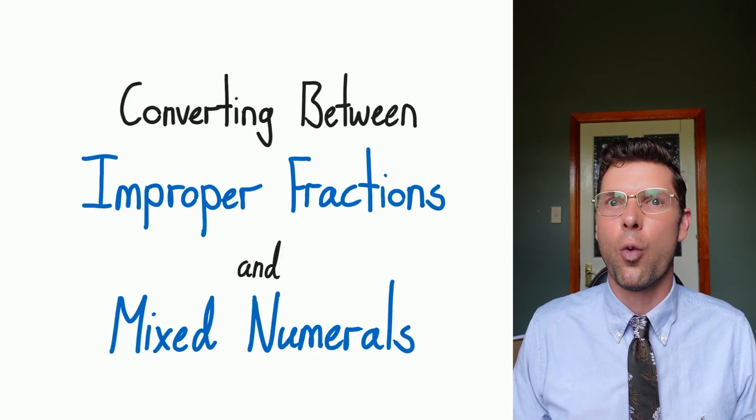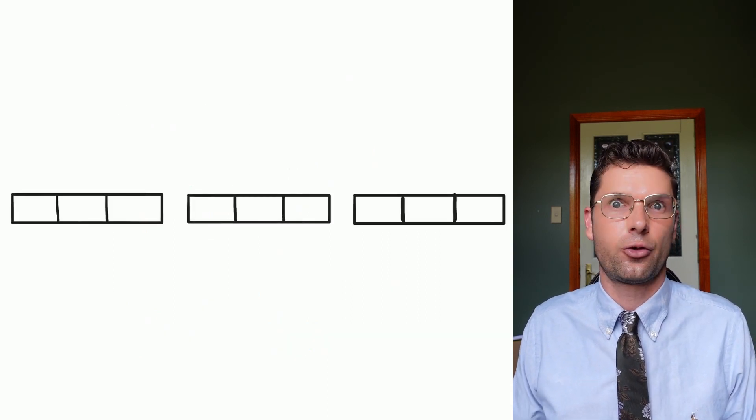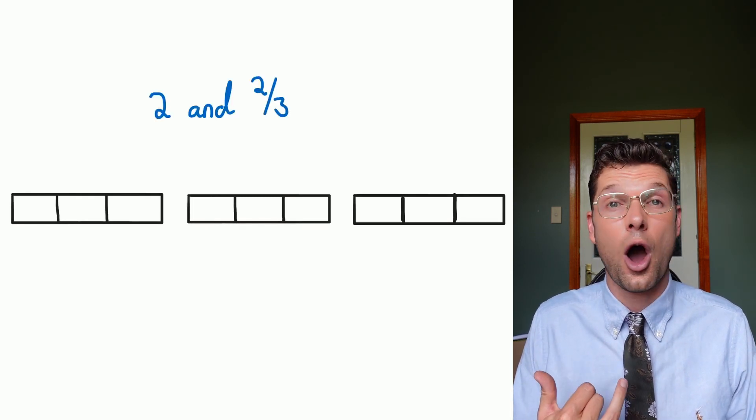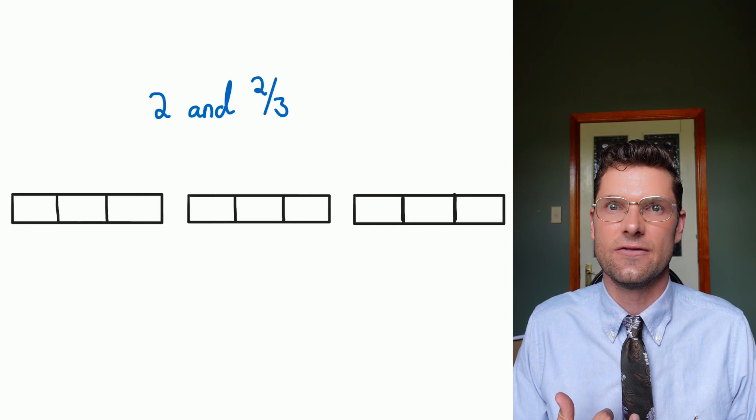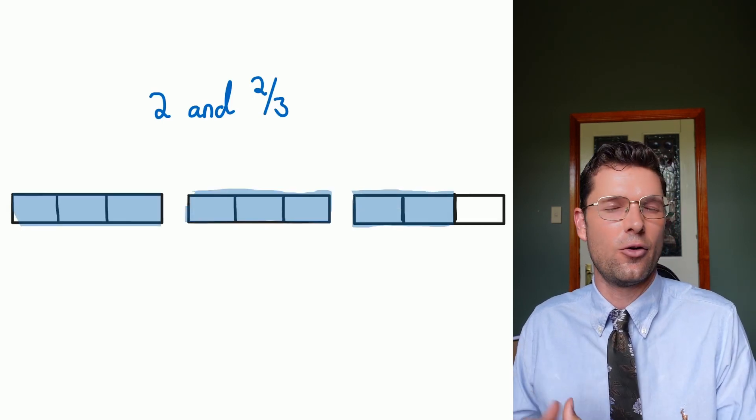Just really quickly, we're gonna go through what an improper fraction and a mixed numeral are. So in this example, I've got three chocolate bars, each of them broken into three pieces. And I'm gonna say I'm gonna eat two whole chocolate bars and then two thirds of the last one. So that means I've eaten all of this blue, all of this blue, and all of this blue.